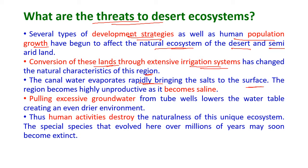The region thus becomes highly unproductive as it becomes saline due to the accumulation of salt. Excessive pumping of groundwater from tube wells and bore wells lowers the water table, creating an even drier environment. Human activities destroy the naturalness of this unique ecosystem, and the special species that evolved here over millions of years may soon become extinct due to changing environmental conditions.